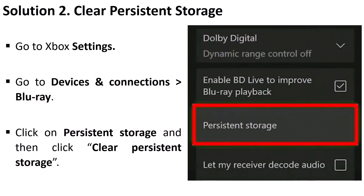The next solution is to clear persistent storage. Go to Xbox Settings, then go to Devices and Connections, then Blu-ray. Click on Persistent Storage and then click on Clear Persistent Storage. If you don't see this option on your Xbox console, then skip this solution.